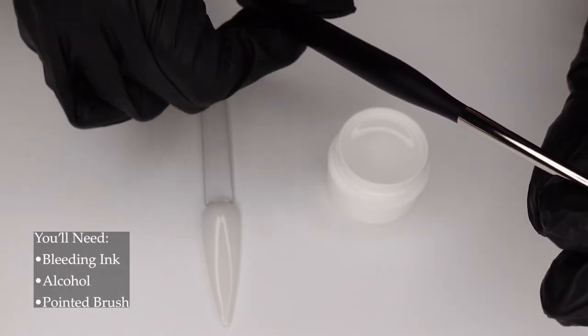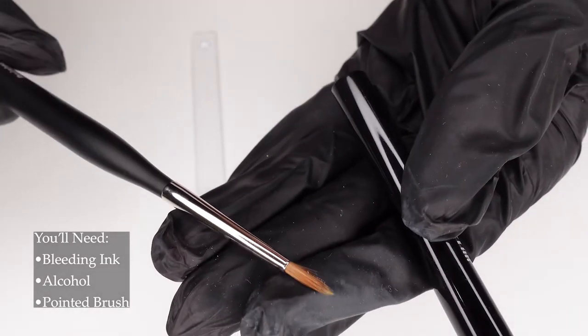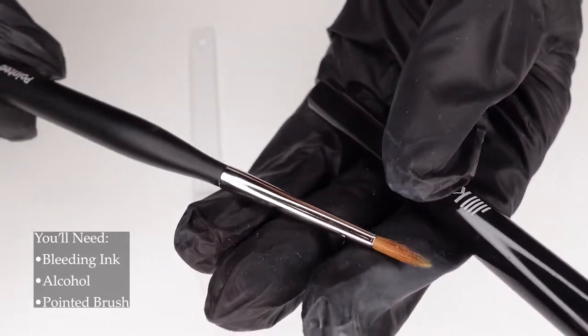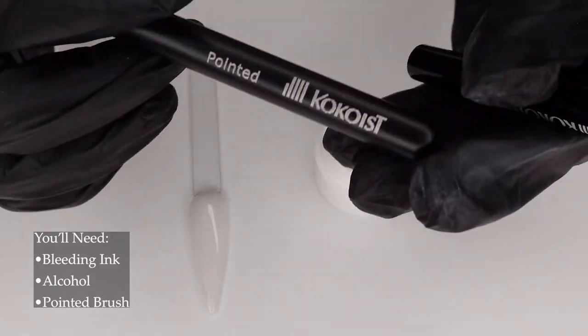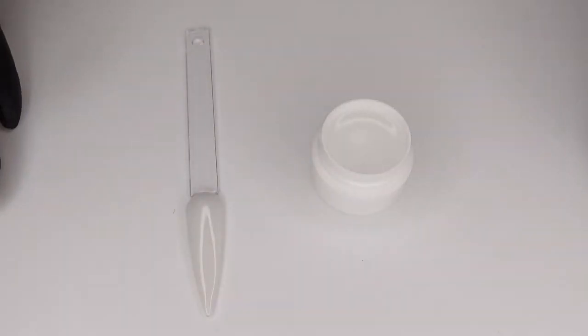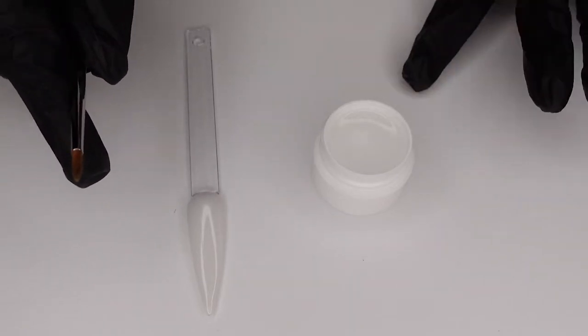If you don't have a pointed nail art brush, a pointed makeup brush will do the job just fine. But I recommend the Cocoist pointed brush. So as long as you have these items, you're good to go and then all you need, of course, is your Bleeding Ink.